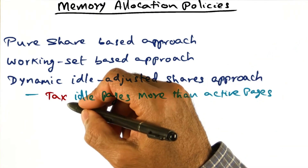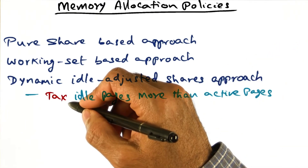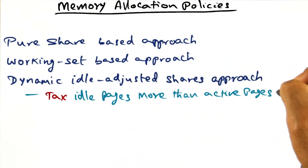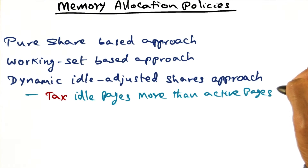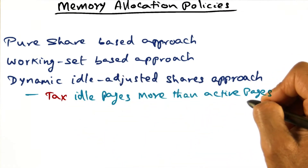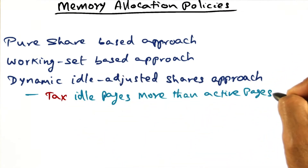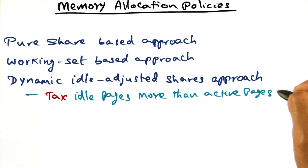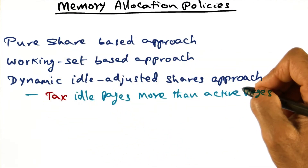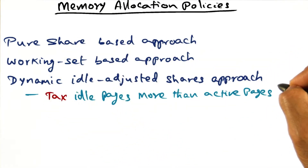In other words, we're going to tax the guys that are hoarders. We tax idle pages more than active pages. If I've given you a bunch of resources and you're actively using it, more power to you. But if you're hoarding it, I'm going to tax you — take away the resources that I gave you. And you may not even notice it because you're not using it anyway. That's the idea in the dynamic, idle-adjusted shares approach.